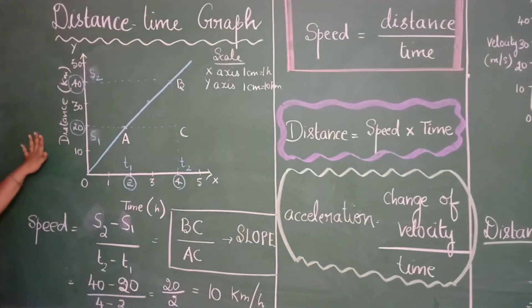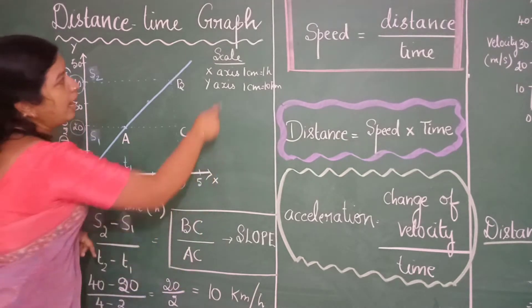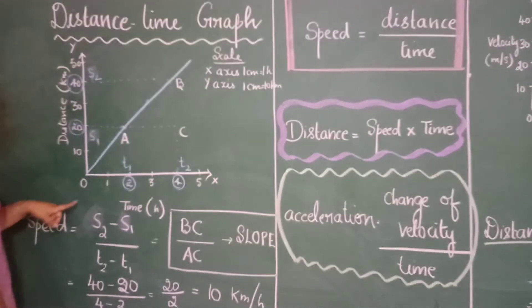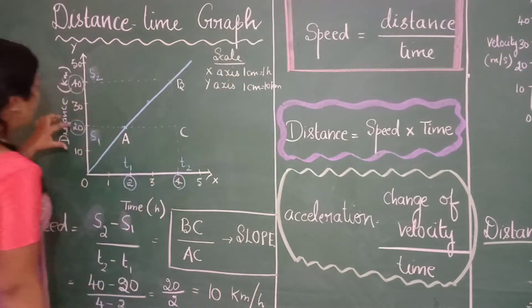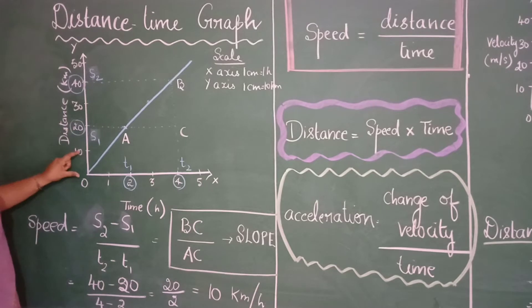So look at this graph. We can see this is a distance time graph. I have taken distance on the y axis and time on the x axis and I have mentioned the scale also. If you see here on x axis 1 cm is equal to 1 hour and on y axis 1 cm is equal to 10 km.